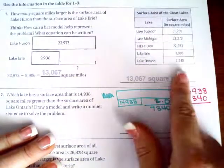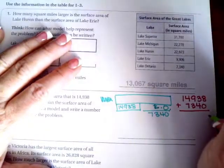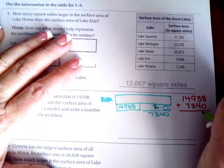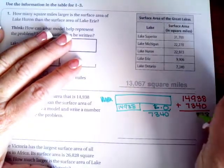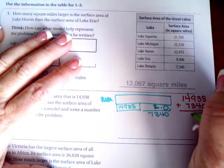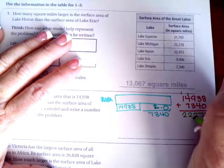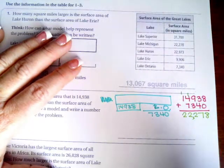So all we're doing is adding those two numbers and seeing which one matches. We're going to go ahead and do that. Eight plus zero is eight, three plus four is seven, nine plus three is twelve. I'm going to carry the one. One plus four is five, plus seven is twelve. Carry the one. One plus one is two, so we have 22,278.